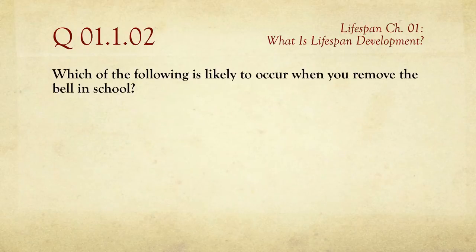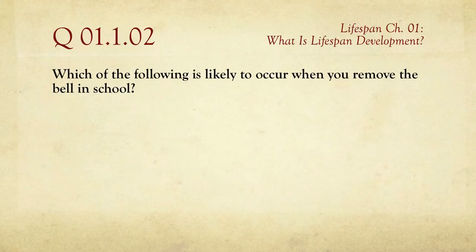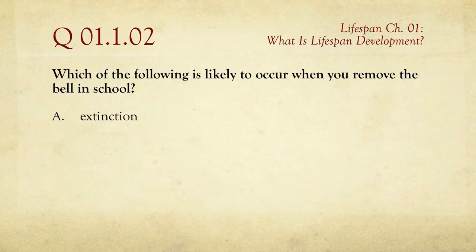Question number two: Which of the following is likely to occur when you remove the bell in school? This is about the association between the bell ringing and school ending — an example of classical conditioning, the building of a passive association. The answers are A, extinction; B, reinforcement; C, conditioned response; or D, consequence.